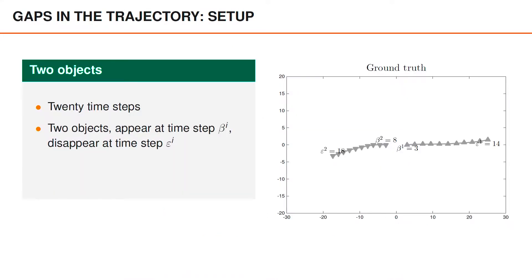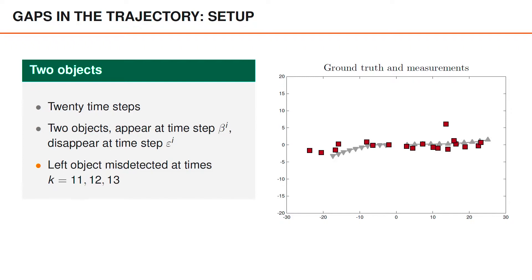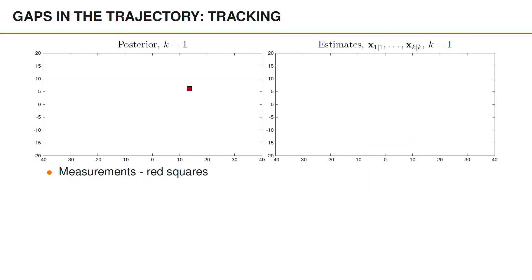The next challenge we face when we use labels is gaps that might appear in the trajectory. We will illustrate this using a 2D example with two objects and 20 timesteps. On the right you can see the ground truth trajectories. The first object appears at time 3, moves to the right, and disappears at time 14. The second object appears at time 8, moves to the left, and disappears at time 18. In this scenario, the object on the left is misdetected three timesteps in a row at times 11, 12, and 13. On the left we show the most probable posterior global hypothesis and measurements as red squares; on the right we show the sequence of labeled estimates used to form trajectories.